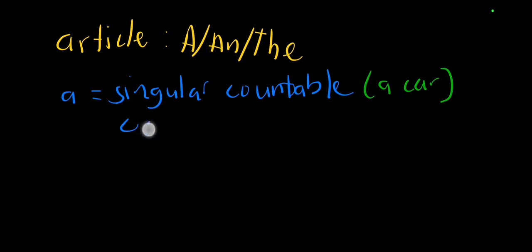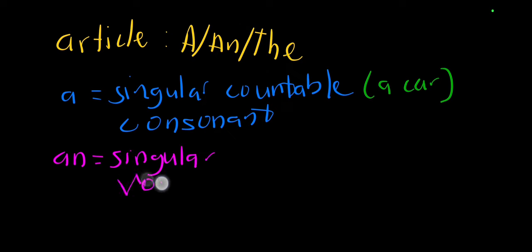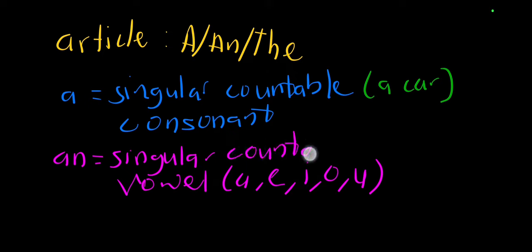We use it for anything that is singular and countable, and you have to make sure that the singular countable noun has a consonant sound at the beginning. A consonant sound is anything besides a, e, i, o, u. For example, 'a car'.